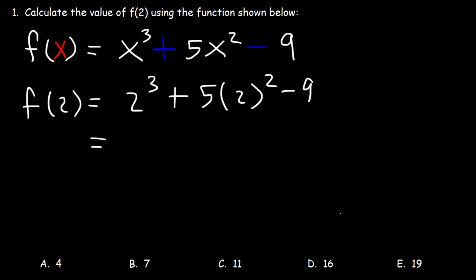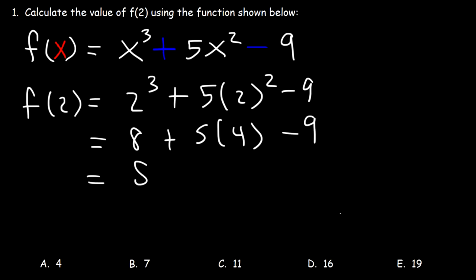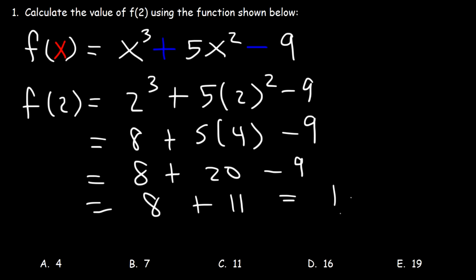2 times 2 times 2 is 8. 2 squared, or 2 times 2, is 4. And 5 times 4 is 20. 20 minus 9 is 11. 8 plus 11 is 19.